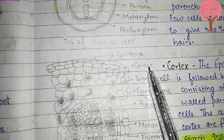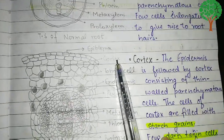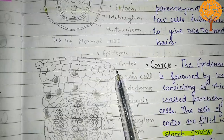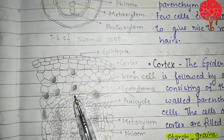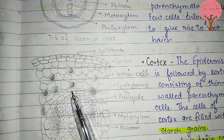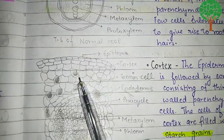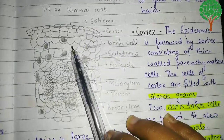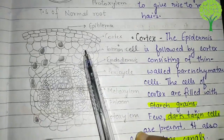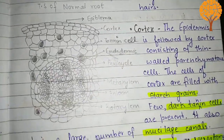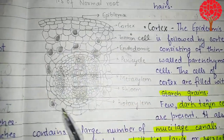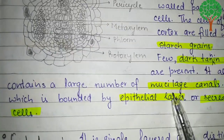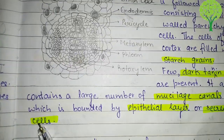The next thing is the cortex. The cortex is present below the epidermis and consists of thin-walled parenchymatous tissues. The cells of the parenchyma are filled with starch grains, and a few dark tannin cells are also present. The cortex also consists of mucilaginous ducts which are bounded by an epithelial layer or secretory cells.